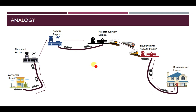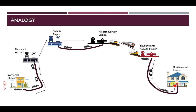Even if you understand the concept, let us take an analogy to explain the data link layer in more detail. I am a person staying at Guwahati and my native place is Brunesor. I want to travel from the Guwahati house to my Brunesor house, so I book tickets through a transport agency. The path involves traveling from Guwahati house to Guwahati airport, then to Kolkata airport since there is no direct flight available.